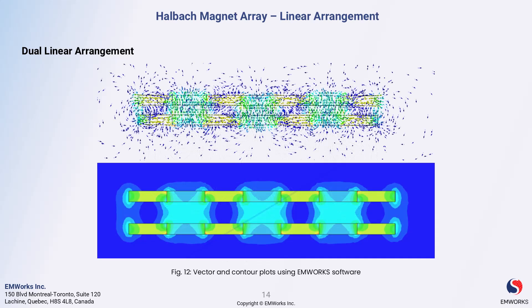Moving on, we will examine the vector and contour plots resulting from simulations conducted with EMWorks software. The vector plot clearly illustrates the direction and intensity of the magnetic fields generated by the dual linear halbach arrays. You can see how the strong magnetic field lines are concentrated between the two arrays.